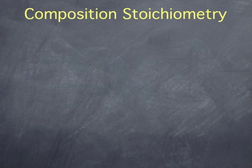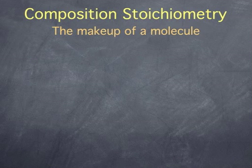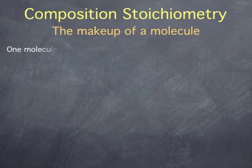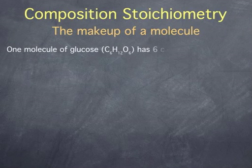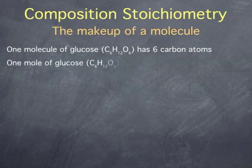Composition stoichiometry refers to the makeup of a molecule in terms of its atomic composition. For instance, we can say that one molecule of glucose has six carbon atoms in it, or equivalently, one mole of glucose has six moles of carbon atoms.